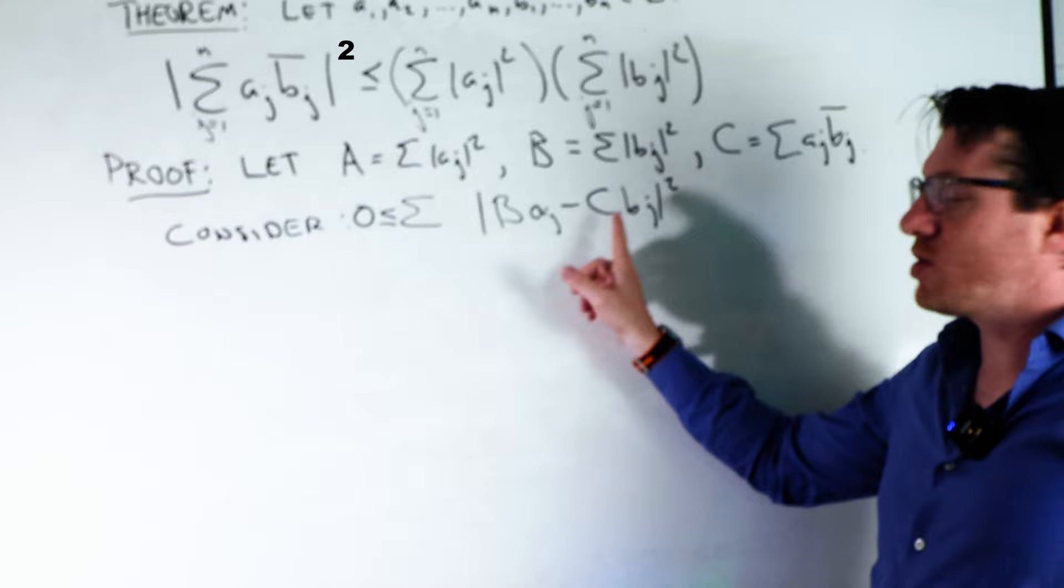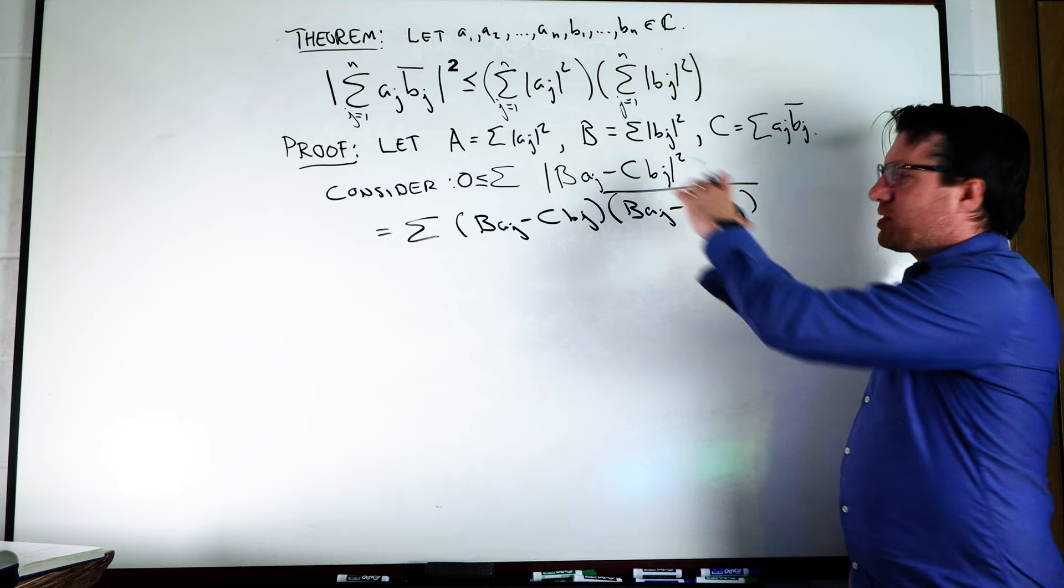What I'm going to do now is expand this in terms of its definition. We're going to write this as this term times its conjugate. I can move this conjugate onto the inside. Now I'm just going to foil.